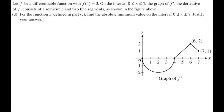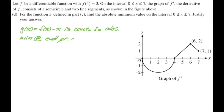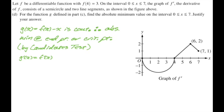For part D, find the absolute minimum value of g on 0 to 7. Since g is continuous, by the candidate's test the absolute minimum occurs at an endpoint or critical point. We need g prime equals 0, meaning f prime equals 1, which happens at x equals 5 and x equals 7. I'll make a table. g of 0 is f of 0 minus 0, which is 3 plus 2 pi. g of 5 is f of 5 minus 5, which is 3.5 minus 5 equals negative 1.5. For g of 7, I need f of 7.